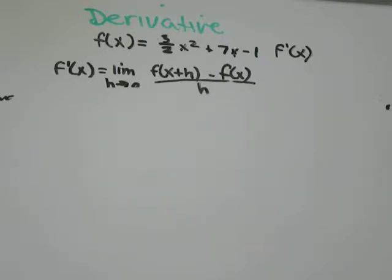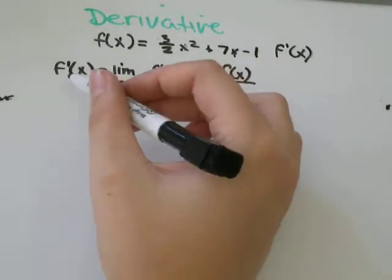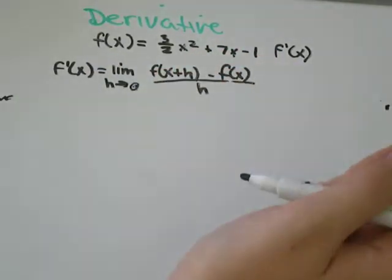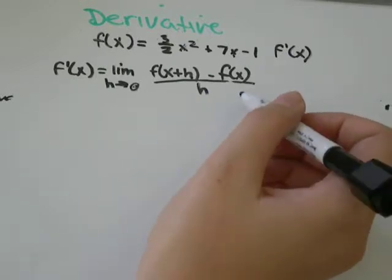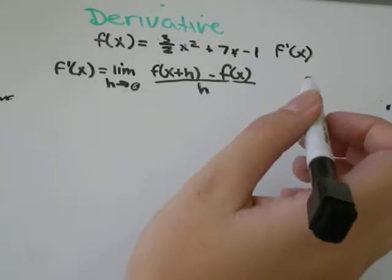So the definition of the derivative says that f prime of x equals the limit as h goes to zero of f of x plus h minus f of x, and all of that divided by h.